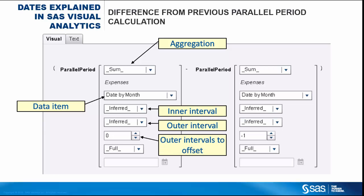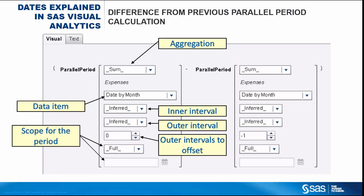The number of outer intervals to offset from the current period is zero, meaning the period from the current outer interval — which is year — is used. The scope for the period, in this case, is full, meaning that the values are aggregated for the entire period. Alternate values are to date, which is up to a specific day in the current period, or to today, which aggregates only up to the equivalent of today's position in the current interval. If you change the scope to date, you would need to specify a specific date in the last field.